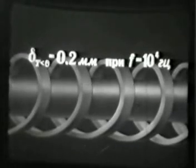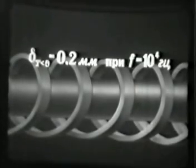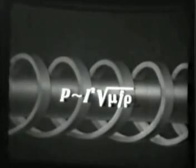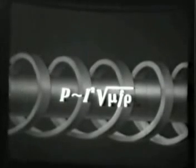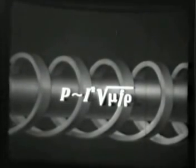Толщина тепловыделяющего слоя при частоте 10 килогерц составляет для холодной ферромагнитной стали доли миллиметра и изменяется обратно пропорционально корню квадратному из частоты тока. При температуре выше точки Кюри глубина проникновения индуктированных токов в сталь возрастает более чем в 10 раз — это происходит из-за сильного понижения магнитной проницаемости при переходе в парамагнитное состояние. По этой же причине мощность тепловыделения при неизменных частоте и силе тока индуктора понижается, несмотря на небольшой рост удельного электросопротивления.